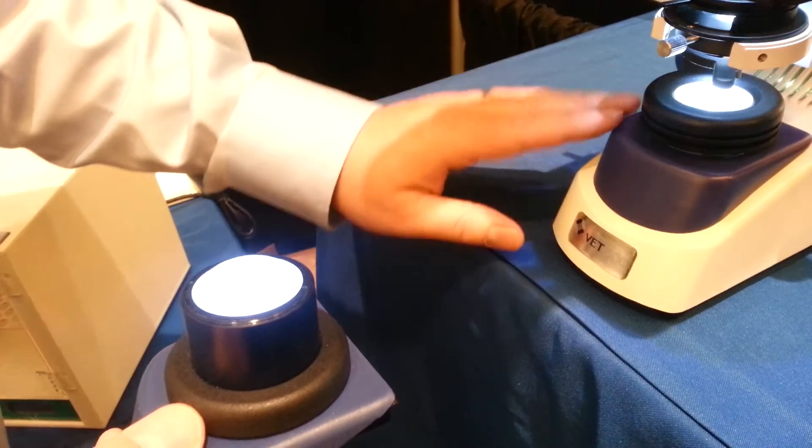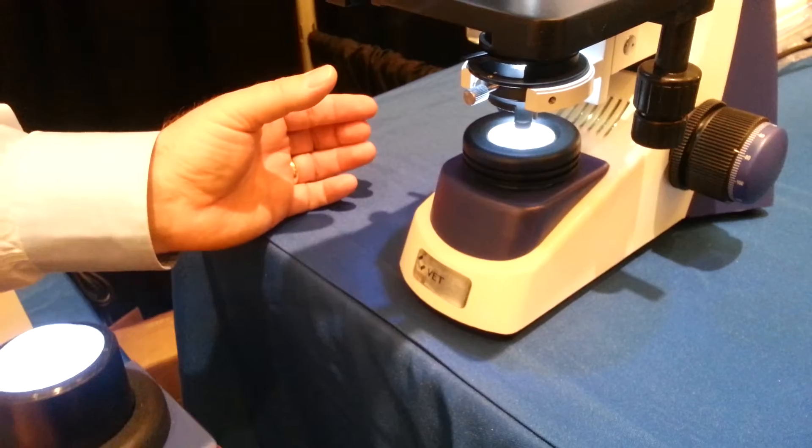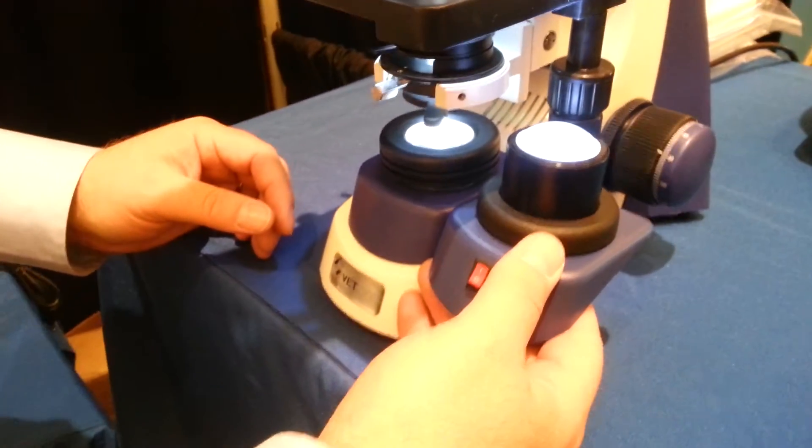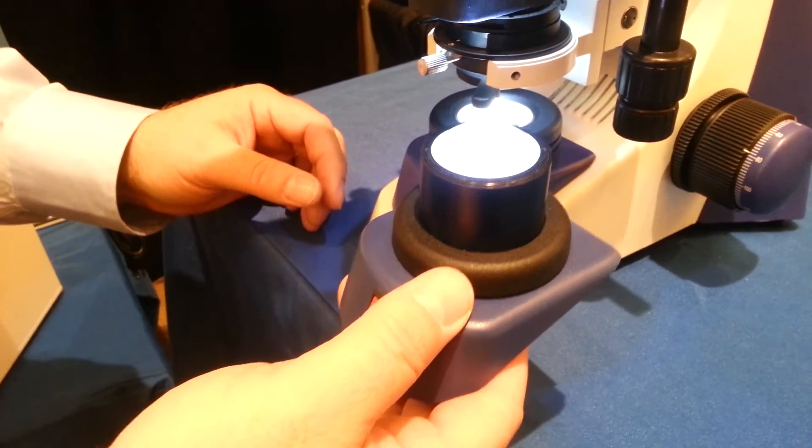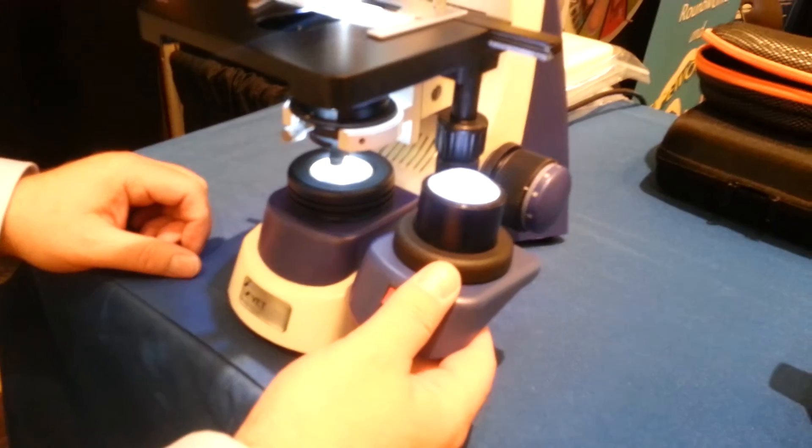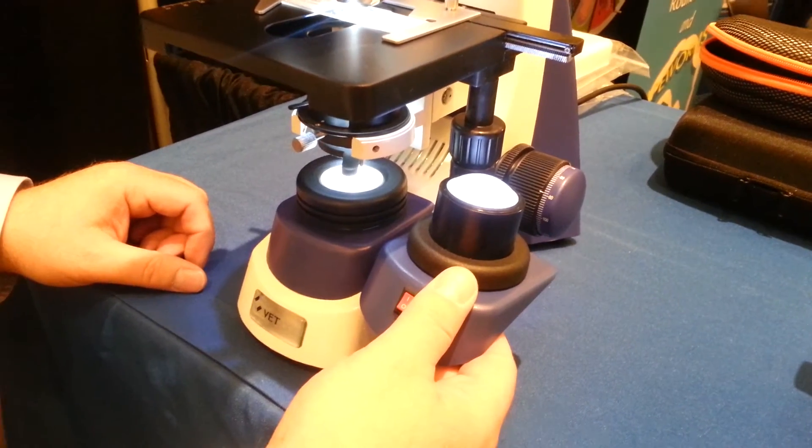On the bottom of the base here on the microscope there's a screw. You just loosen the screw, pop out this illuminator, place that illuminator in its place and all of a sudden you've got a cordless portable take anywhere microscope that will last for about 50 hours on three AA batteries.